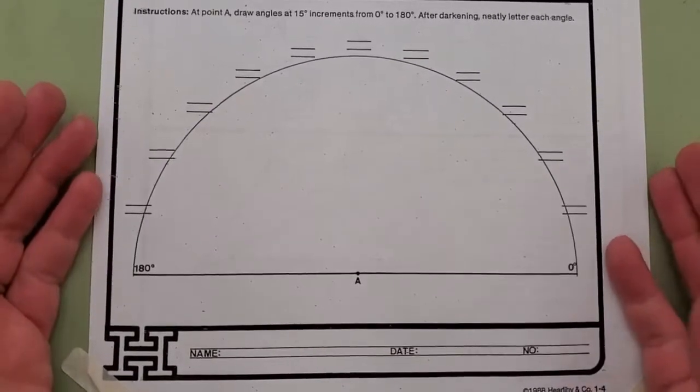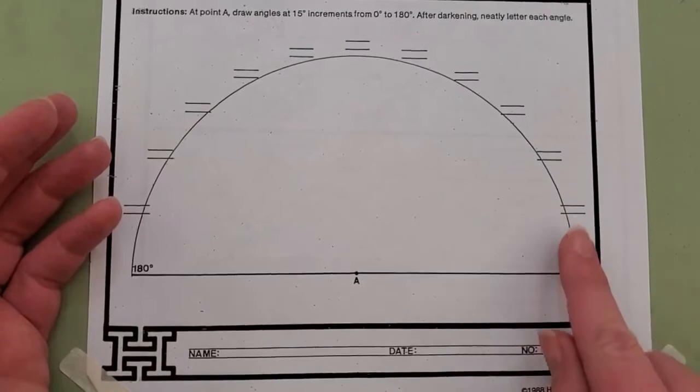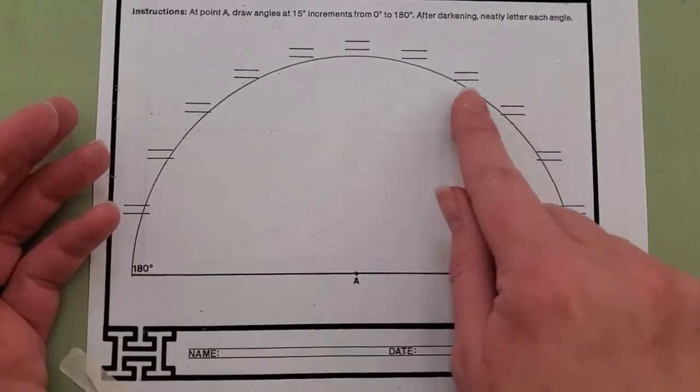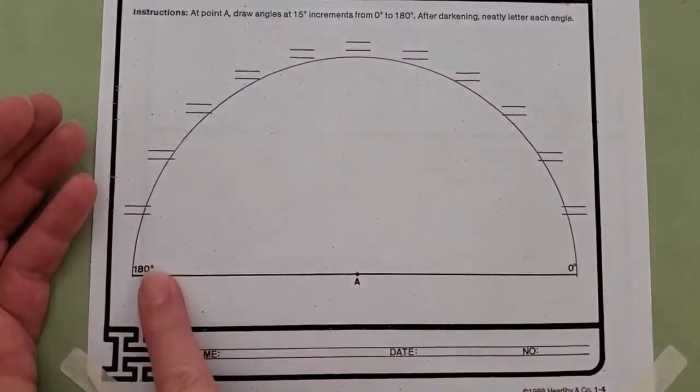I've had several students ask me about the 15 degree increments. First I want to point out that when you number your 15 degree increments, you're going in order from 0 to 180.